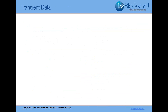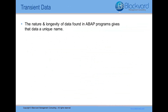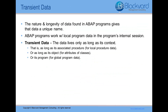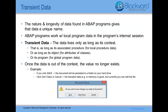So let's begin by talking about transient data, and then we'll talk about how persistent data is a little bit different. It's important to note that the nature and longevity of the data in ABAP programs gives that data a unique name. In principle, ABAP programs work with local program data, which resides in the program's internal session. This data is known as transient data, and it lives only as long as its context — that is, as long as its associated procedure for local procedure data, its object for attributes of classes, or its program for global program data. In transient data, once the data is out of the context or runtime of the program, the value no longer exists.